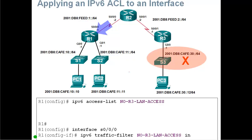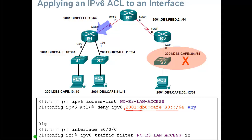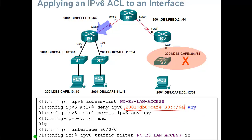For example, applying an IPv6 ACL to an interface: we create 'ipv6 access-list NO_R3_LAN_ACCESS' to deny a specific LAN. Inside the ACL configuration we say 'deny ipv6 2001:DB8:CAFE:30::/64 any' — so the source is that prefix and it goes to any destination. Then we add 'permit ipv6 any any' to allow everything else. Then we go to interface S0/0 and apply it with 'ipv6 traffic-filter NO_R3_LAN_ACCESS in', matching the ACL name to the interface command.